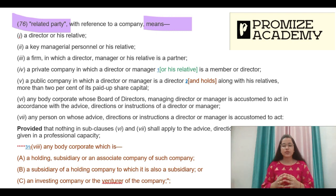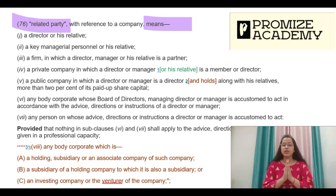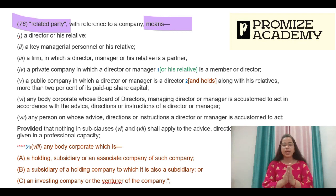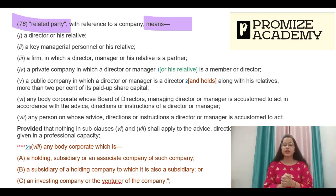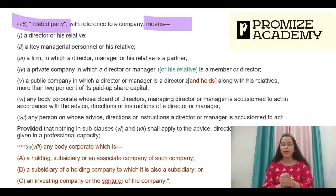What you are seeing is Section 2, Clause 76. The definition is always given with clause — that is Section 2(76). Related party, with reference to a company, means: the first category is Director. Director is defined under Section 2(34) as any person who is appointed to the board of the company. It is important that the person is appointed to the board, which means shadow directors cannot come under this definition. This definition includes only directors appointed following the due process of law — and his relative.